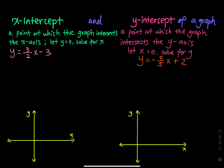The y-intercept is a point at which the graph intersects the y-axis. We have a point on the y-axis, and at that point, x equals 0.